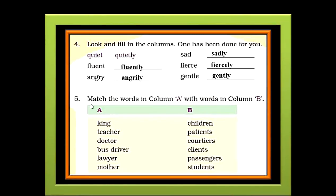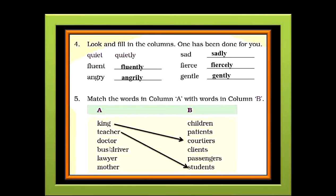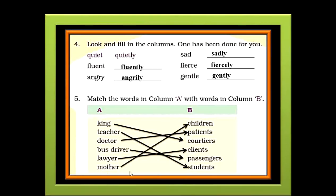The next exercise is match the words in column A with words in column B. There are some words given in column B that are related to the words given in column A. So let's try to find the appropriate match. The first word is king, and the word related to king is courtiers. The second word is teacher, and the word students is related to it. The next word is doctor, and it is related to patients. The fourth word is bus driver, and he is related to passengers. A lawyer is related to clients. And a mother is related to children.